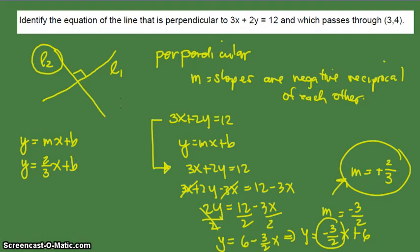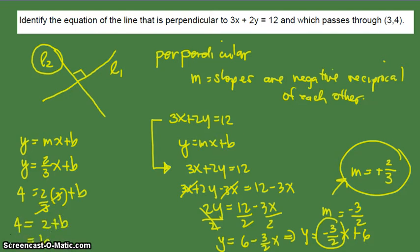How do we find the value of b? Since the line is passing through the point (3, 4), whenever x is 3, the y value is 4. So substituting x as 3 and y as 4, we get 4 equals 2/3 times 3 plus b, which gives 4 equals 2 plus b. Solving for b, we get b equals 4 minus 2, so b equals 2.